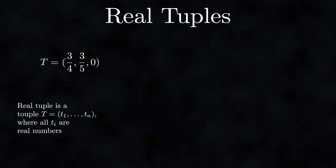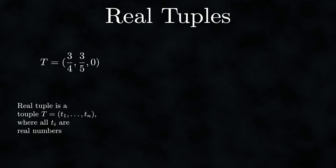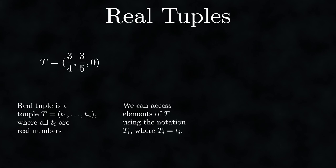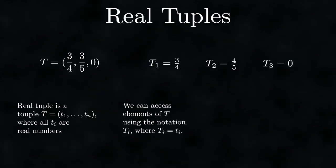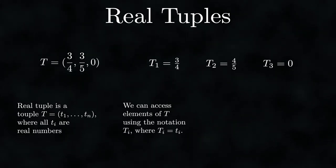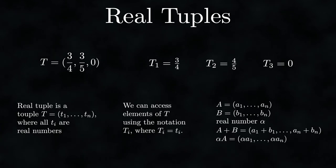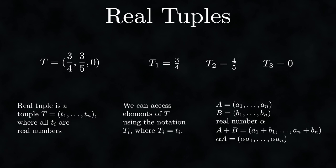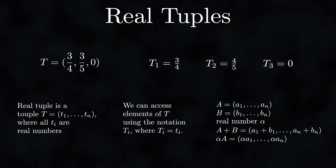We'll be using tuples of only real numbers quite often. To simplify our work, we'll treat real tuples as real vectors. This means we'll use vector indexing notation: t1 equals 3/4, t2 equals 4/5, t3 equals 0. We'll also allow ourselves to perform vector operations on real tuples — vector addition, scalar multiplication, and more operations which we'll discuss in later episodes.